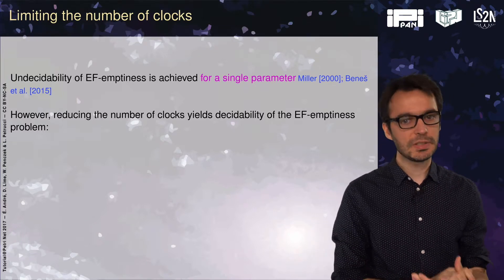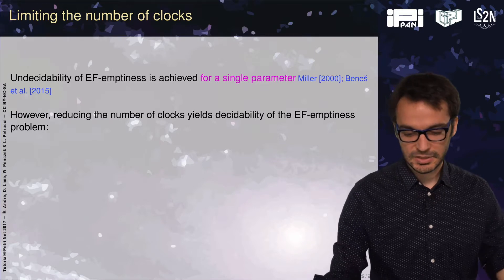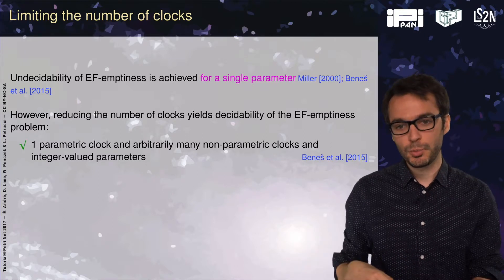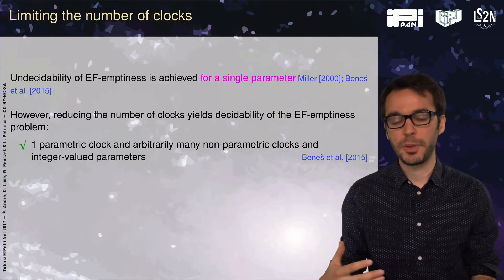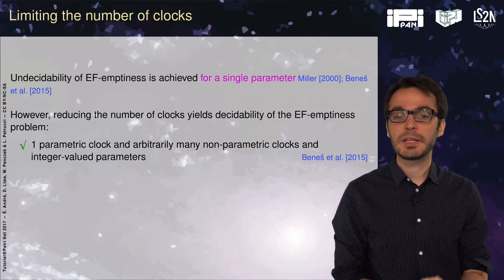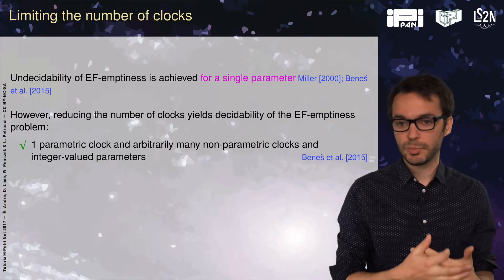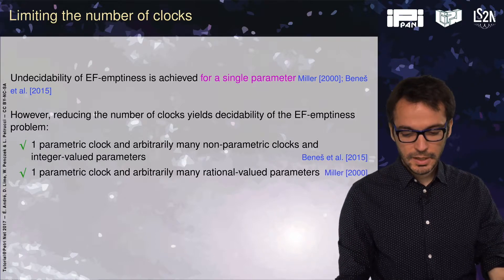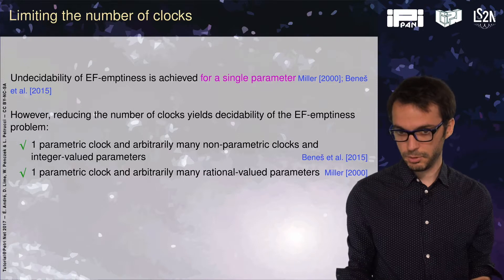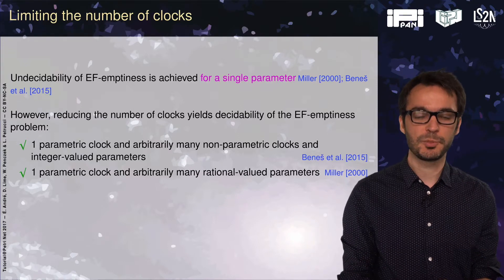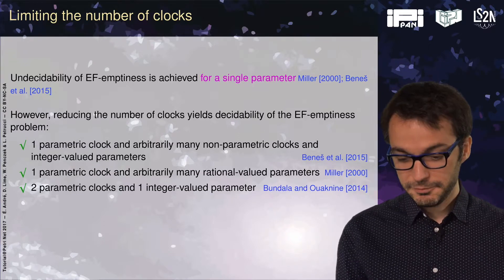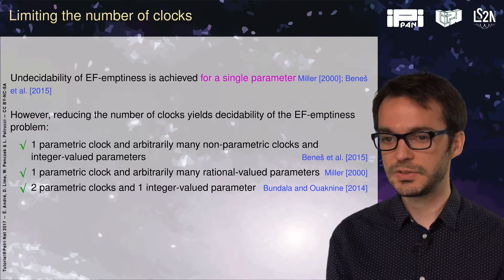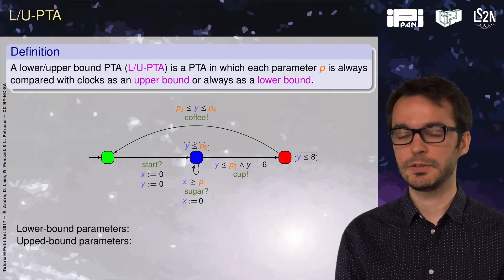However, we can retrieve decidability by reducing the number of clocks in the EF emptiness problem. For instance, with one parametric clock — a clock compared to a parameter — and as many non-parametric clocks and integer-valued parameters as we want, we get decidability. With a single parametric clock, no other clock, and as many rational-valued parameters as we want, it is also decidable. With two parametric clocks, a single integer-valued parameter, and no other clock, we also get decidability. There are further open cases not listed here.